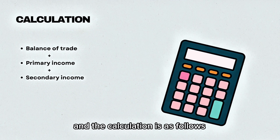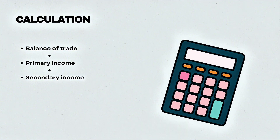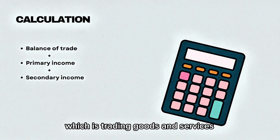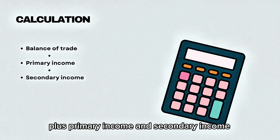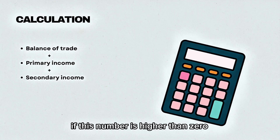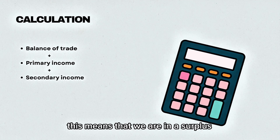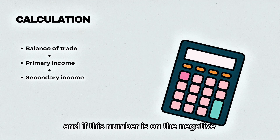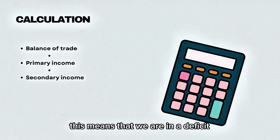The calculation is as follows: the balance of trade, which is trade in goods and services, plus primary income and secondary income. If this number is higher than zero, we are in a surplus. If this number is negative, we are in a deficit.